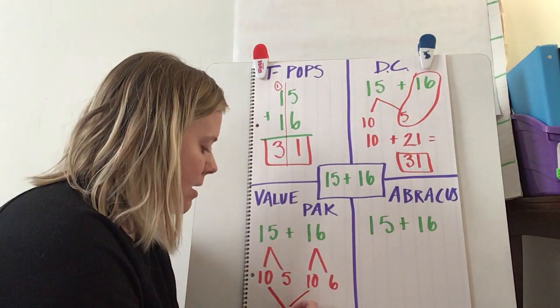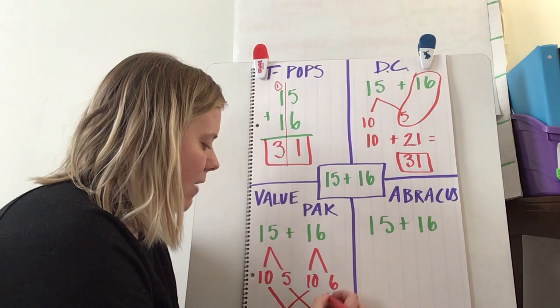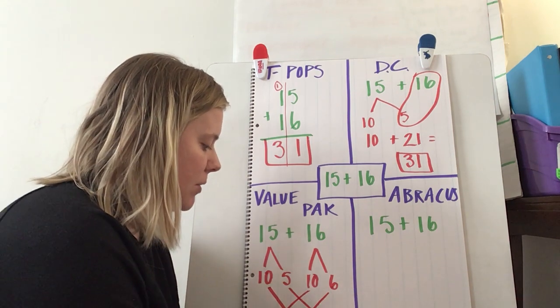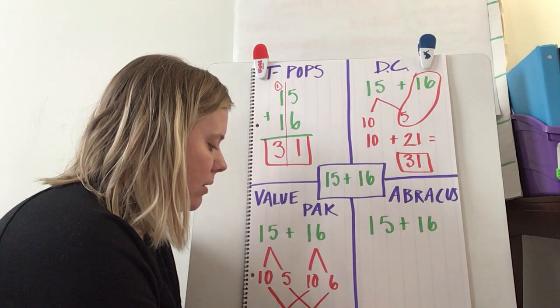10 and 10 is 20. 5 and 6 is 11. So I have 20 plus 11 equals 31.